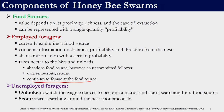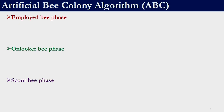There are two types of unemployed foragers: onlookers and scouts. Onlookers watch the waggle dance and may choose to follow a particular bee to search for a food source. Scouts do not necessarily watch the waggle dance but start exploring around the nest spontaneously. So the three components are: food source, employed foragers, and unemployed foragers. The Artificial Bee Colony algorithm consists of three phases: the employed bee phase, onlooker bee phase, and scout bee phase.